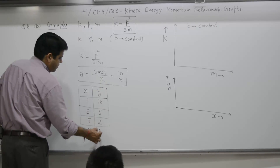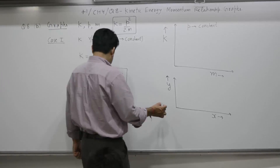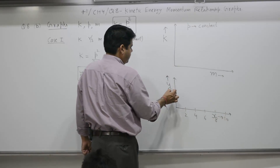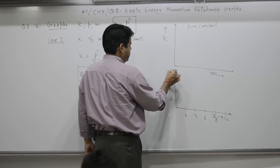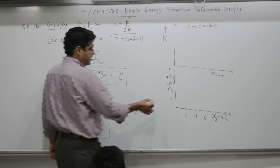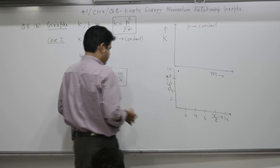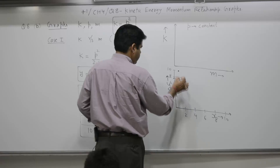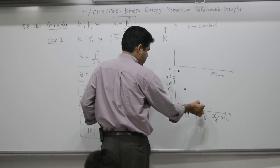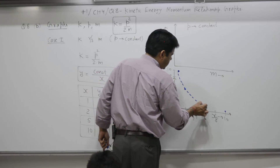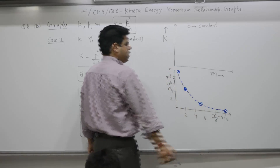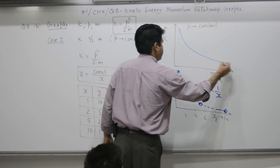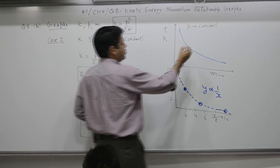Continuing the table: when x is 10, y is 1. Joining all these points gives a graph where y is inversely proportional to x — a rectangular hyperbola. So K is inversely proportional to m. As m increases, K decreases, with the condition that p remains constant.